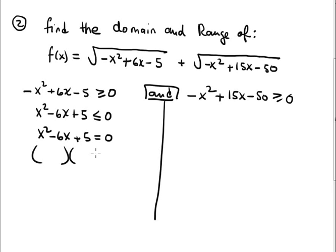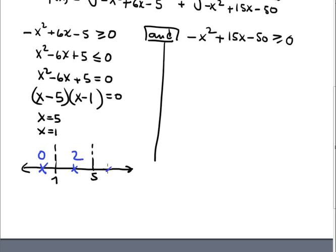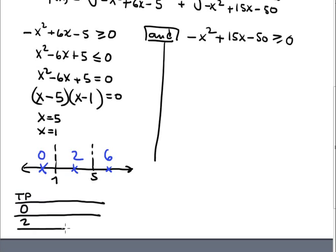Now compare the two equations to find the critical values — it's a polynomial inequality. Factoring gives (x minus 5)(x minus 1), so the critical values are 5 and 1. This creates the partition at 1 and 5, with testing points 0, 2, and 6. The chart has columns for testing points 0, 2, and 6, with factors (x minus 5), (x minus 1), and the total.